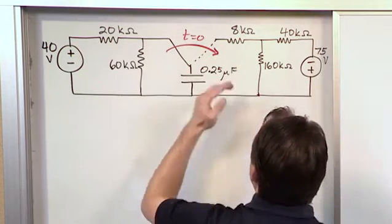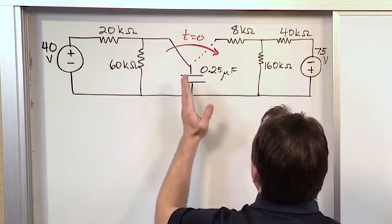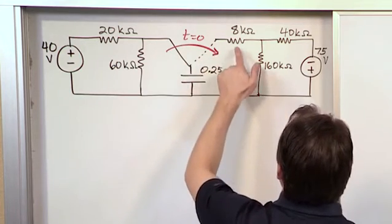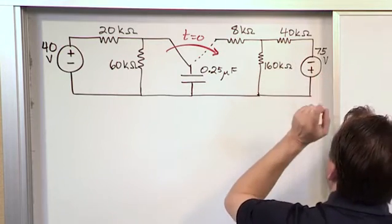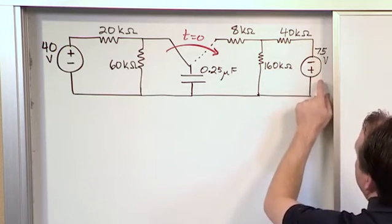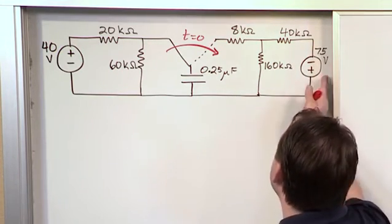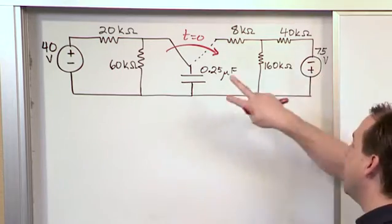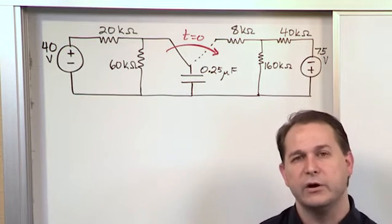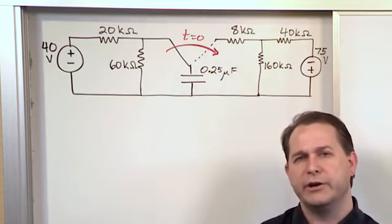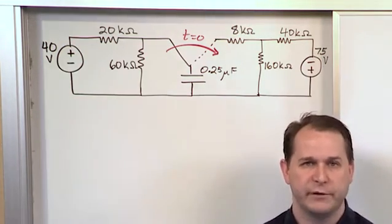And then when we switch it over here, the capacitor is connected to this circuit where we have resistors 8 kilo ohms, 160 kilo ohms, 40 kilo ohms, but what we have also is a 75 volt source also connected on this side. And this source is actually upside down compared to how it is on the other side of the circuit. So there's a lot of stuff going on here, but you need to kind of think about it from a big picture point of view.